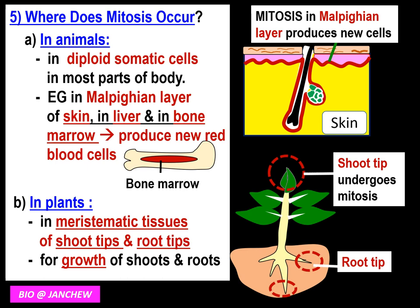Next, let us find out where mitosis occurs — the location of mitosis in animals and plants. In animals, it occurs in the diploid somatic cells in most parts of the body. For example, in the Malpighian layer of the skin, in the liver, and the bone marrow, which helps to produce new red blood cells to replace old ones.